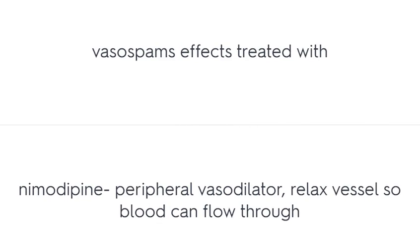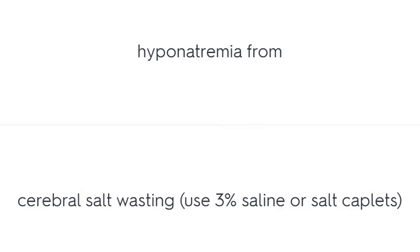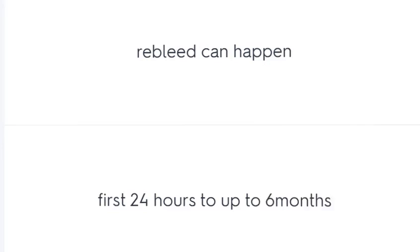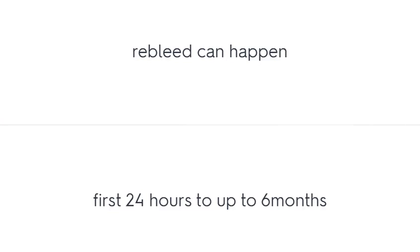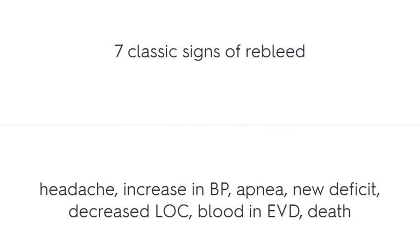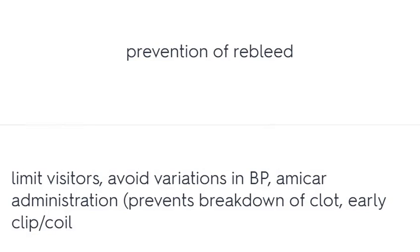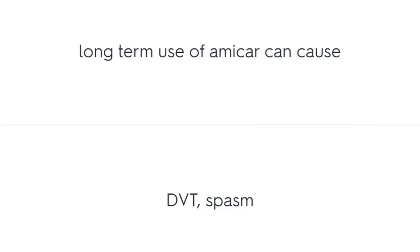Prevention of rebleed: prevent visitors, keep quiet until the aneurysm is fixed, and avoid large variations in BP. Signs of rebleed include sudden headache, increase in BP, apneic spell, worsening deficit, decreased LOC, and if a ventricular drain is in place, sudden filling of the drain. Vasospasm is treated with Nimodipine, a peripheral vasodilator that relaxes the vessel so blood can flow through. Prevention of rebleed also includes limiting visitors, avoiding BP variations, administering Amicar to prevent breakdown of the clot, and early clip or coiling. Long-term use of Amicar can cause DVT and spasm.